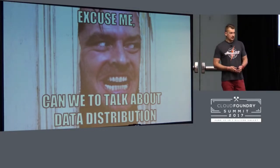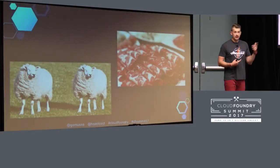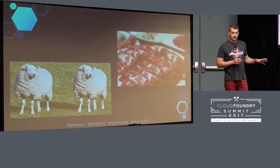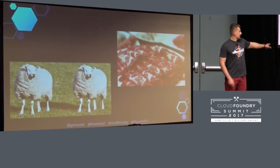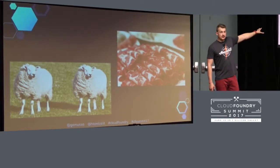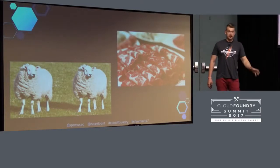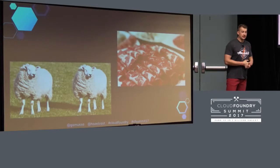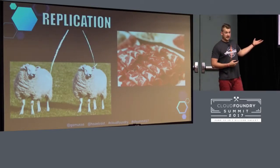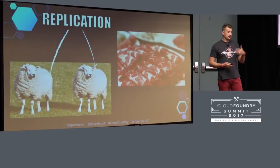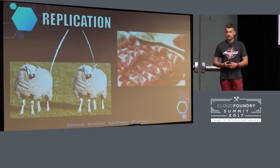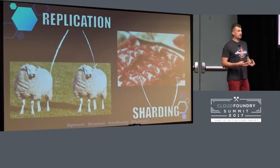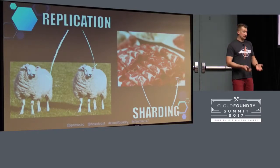Let's talk about data distribution in a distributed cache. In this picture I have two patterns of data distribution. On one side I have two absolutely identical data sets — that's replication — where the same data is copied to multiple nodes. On the other side I have a data set represented in a sliced form — that's partitioning, or sharding.